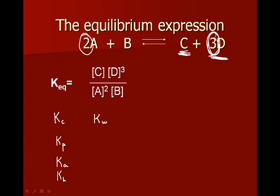Kw is a very special equilibrium constant, and it's 1 times 10 to the negative 14, and this is what we base our pH scale on. That's why the pH scale usually goes from 0 to 14, and that's because of the Kw, the equilibrium expression for water dissociation.